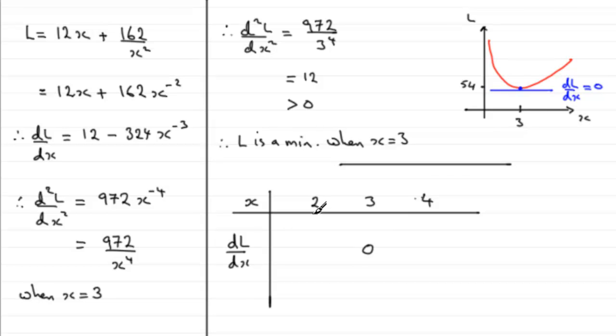But what is the gradient when x equals 2? What we just got to substitute x equals 2 into DL by DX, this equation here. Might be easier to just substitute in as 12 minus 324 over x³, but if you do do that, you should find that you get a negative value. In fact, that value turns out to be -28.5.